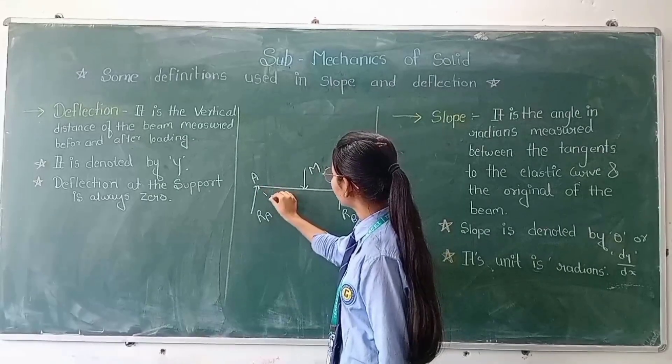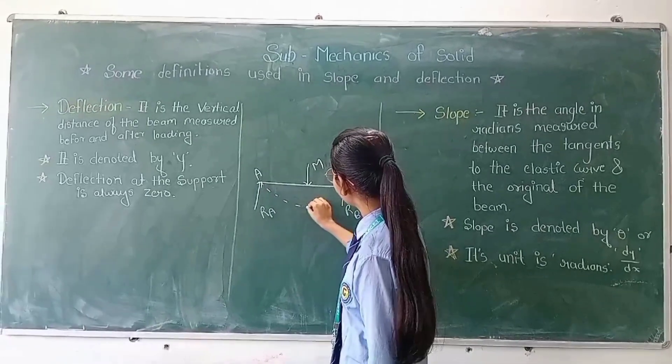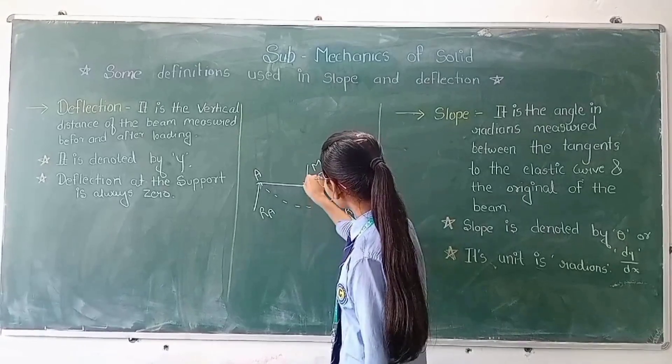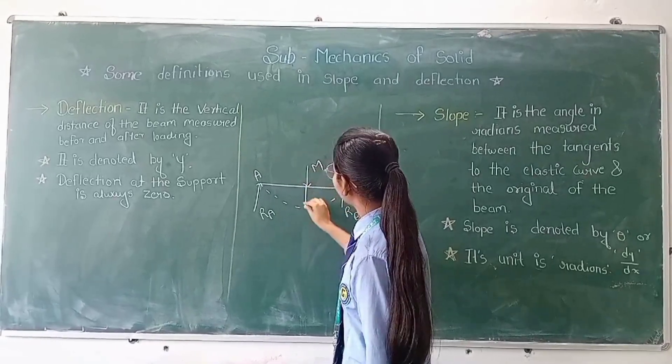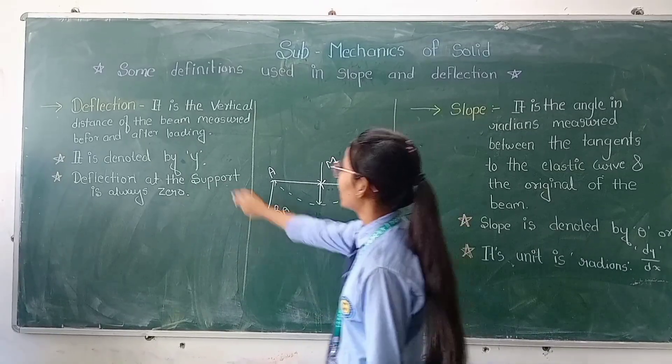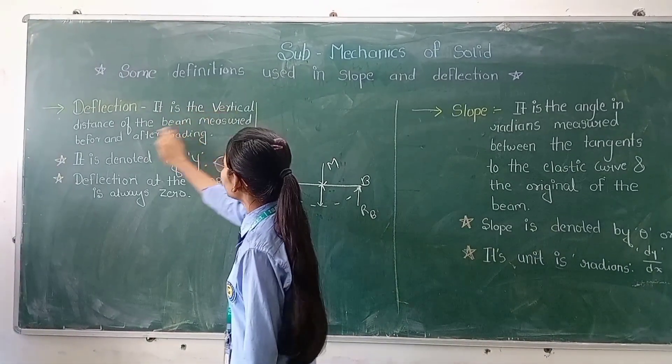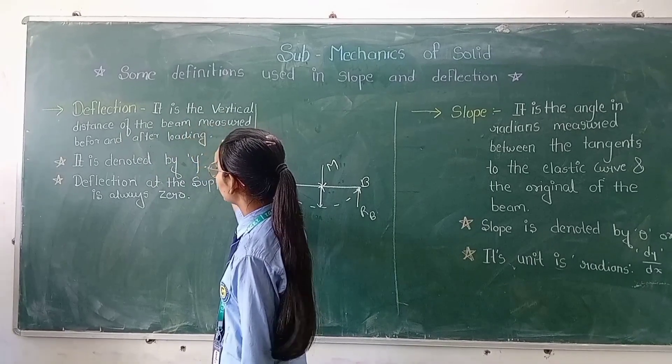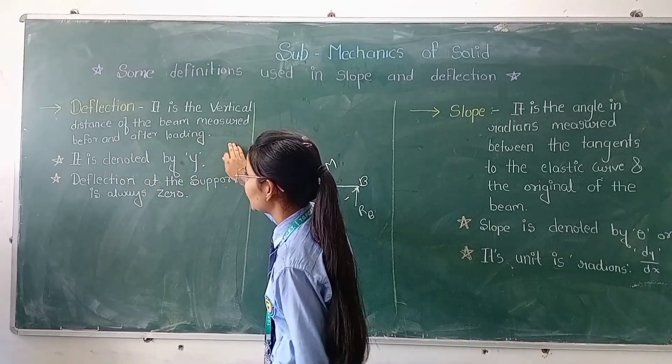Then the load will deflect in this manner. The deflection becomes here. I will say that it is the vertical distance of the beam measured before and after loading.